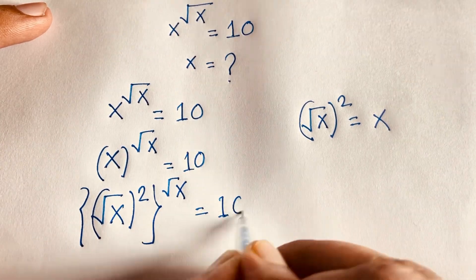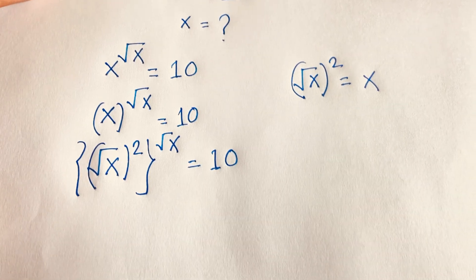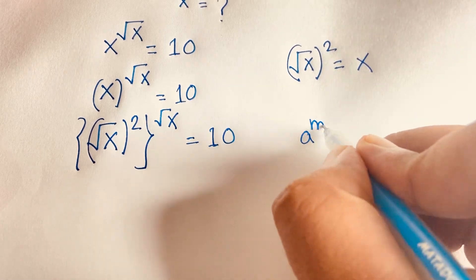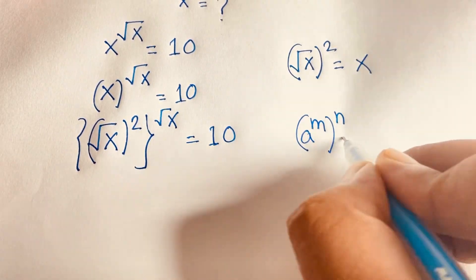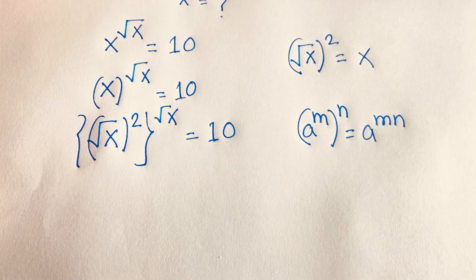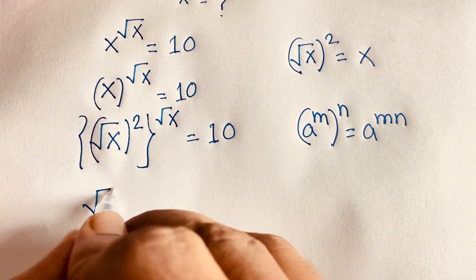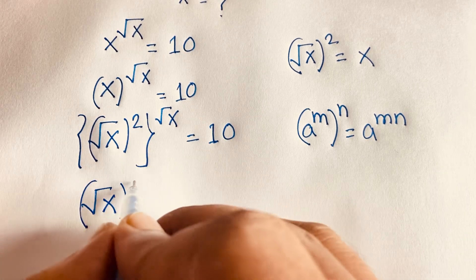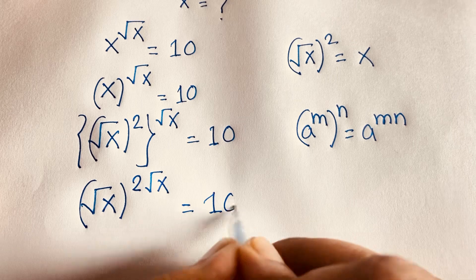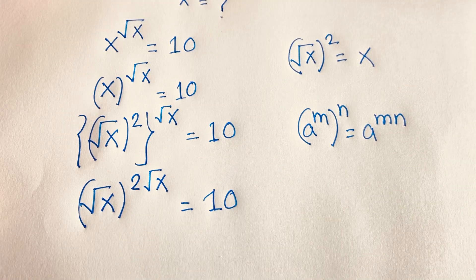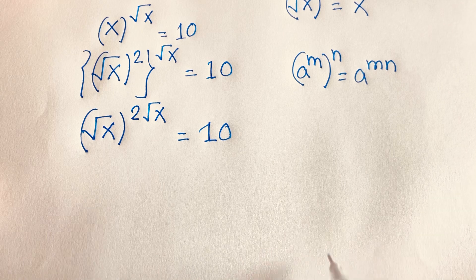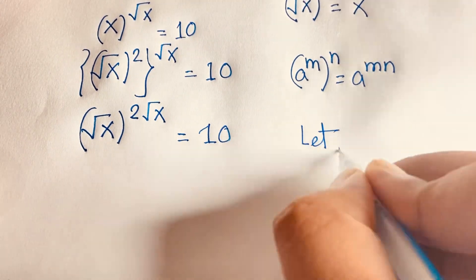Yes. Then, using the exponential rule — a to the power m, whole to the power n, is equal to a to the power m·n — according to these rules I can translate this expression. It will be (√x) whole to the power 2 times (√x), which gives (√x)^(2√x) is equal to 10.